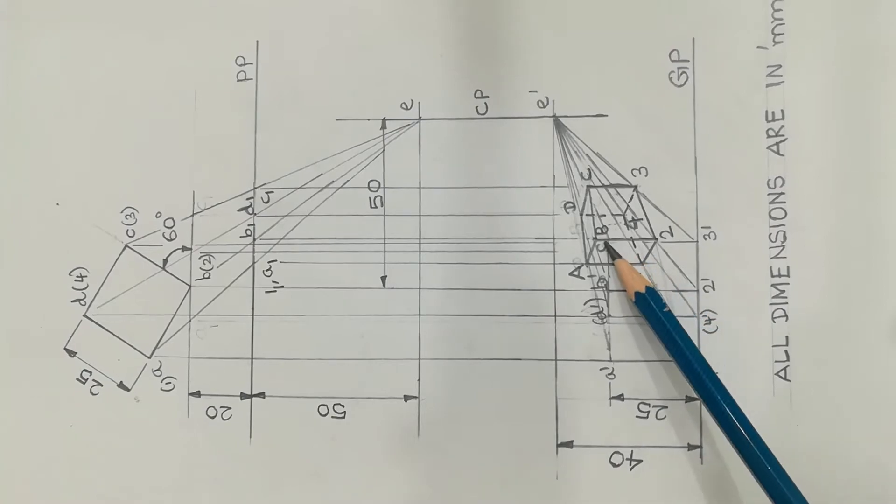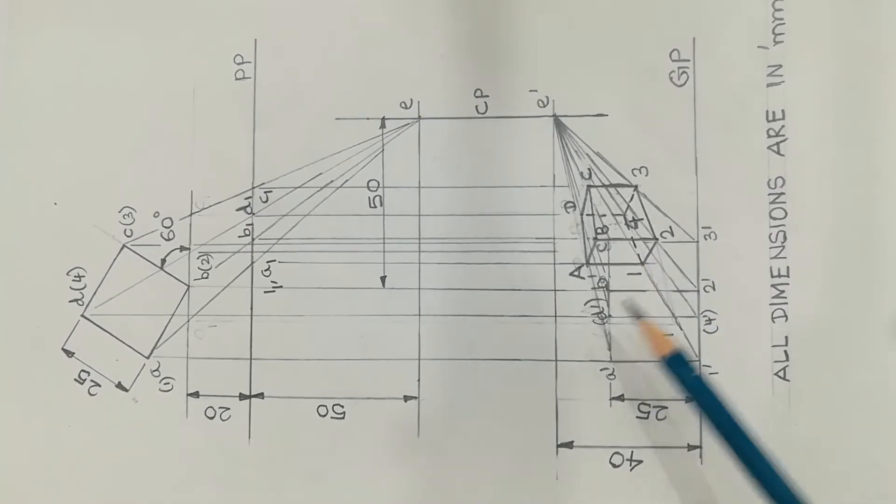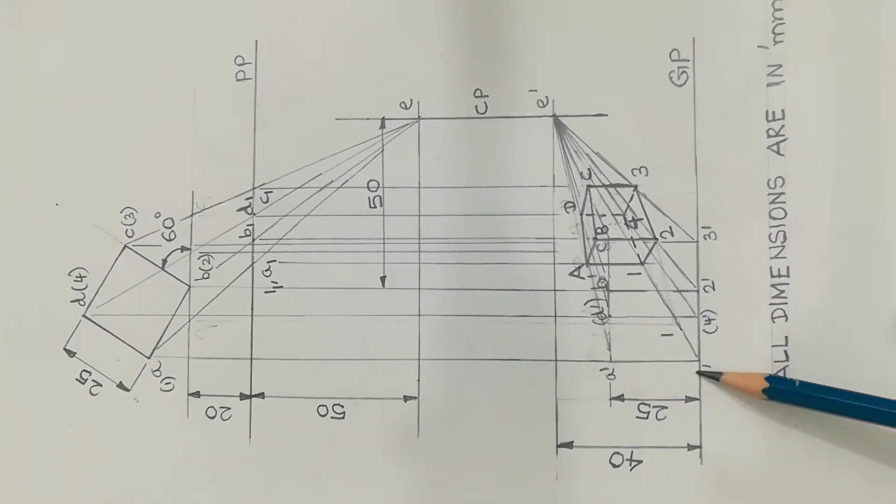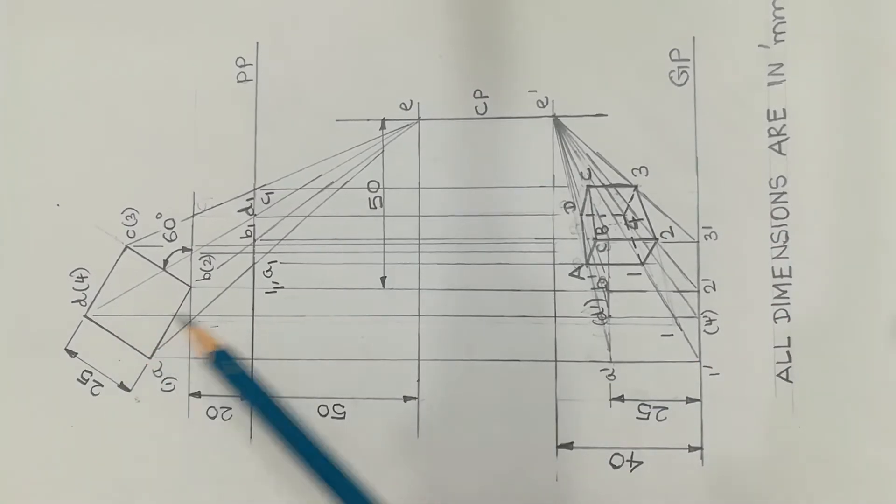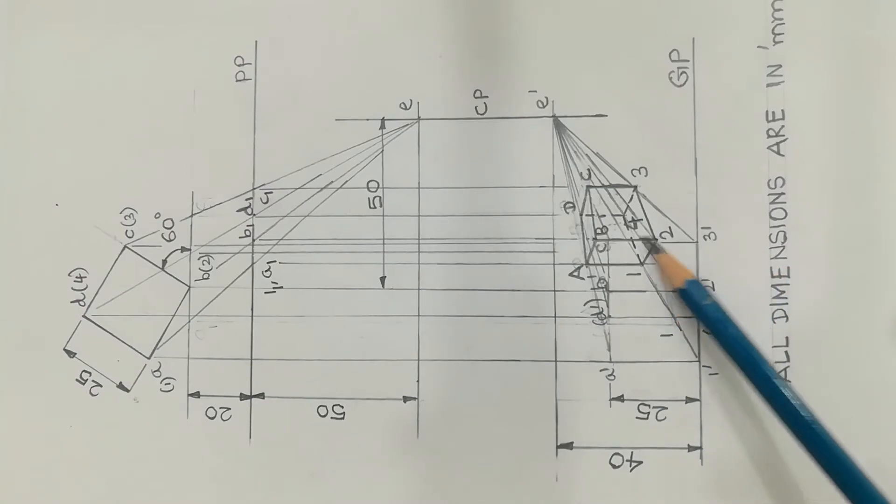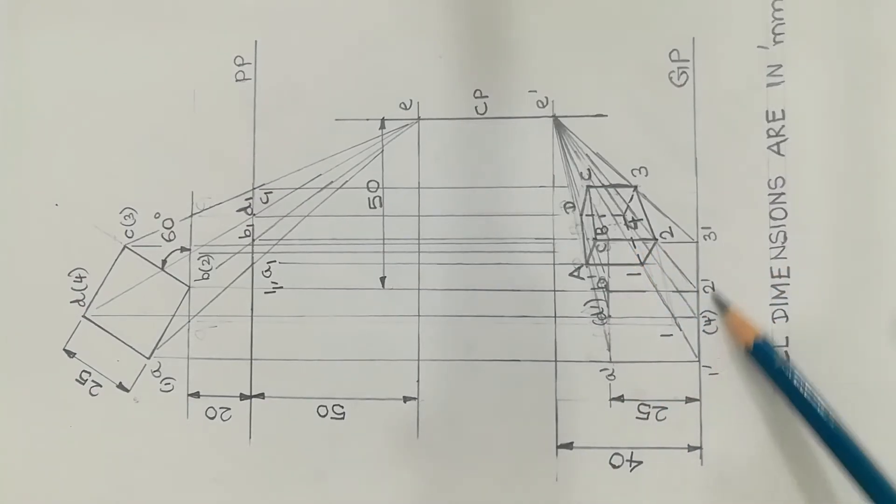Base corners are given numbers 1 dash, 2 dash, 3 dash, 4 dash. This is the top view. This is exactly the GP line. From the front view, this is the front view. Now place the station point location.